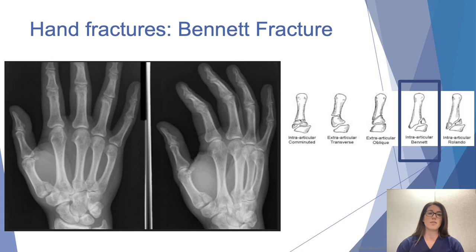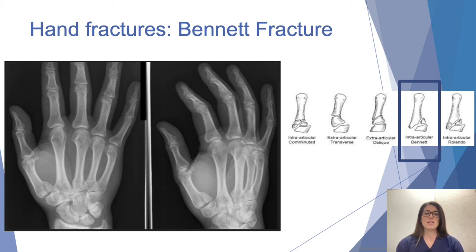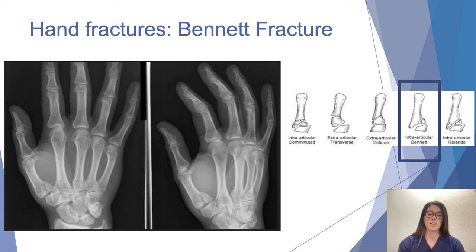Another common fracture is the Bennett fracture, usually sustained from an axial load to the thumb resulting in forced abduction. A small fragment is seen at the first metacarpal base articulating with the trapezium. There are both non-operative and operative options for both boxer's and Bennett fractures.